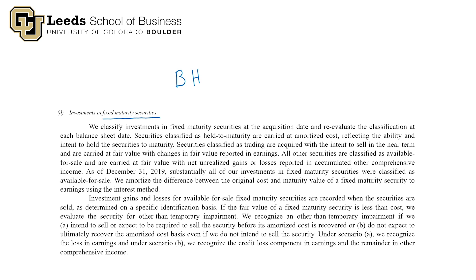There's one important sentence I want to highlight in this accounting policy. As of December 31st, 2019, substantially all of their investments in fixed maturity securities were classified as available for sale. So all of their debt securities are available for sale, and they're going to account for all of them in the same way.